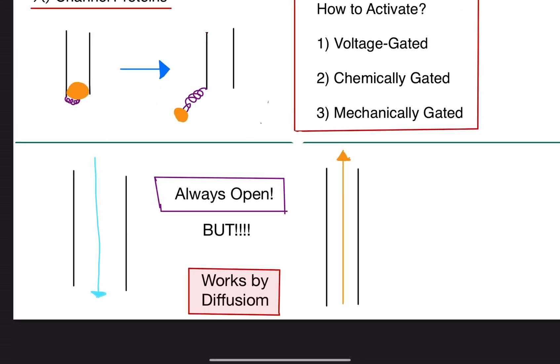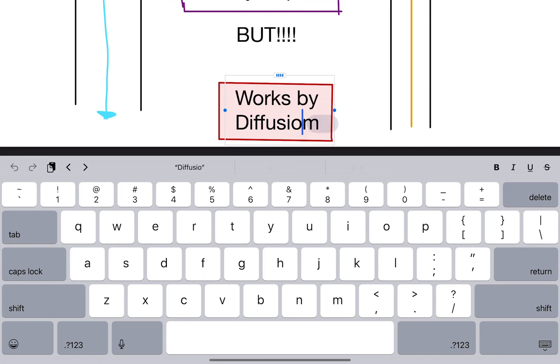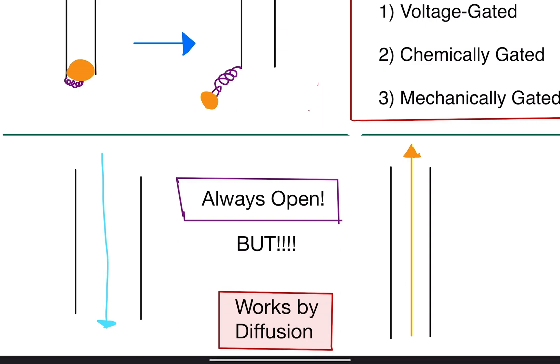Now, these are called always open channels or open channels. These are literally channels that are constantly open, so ions can go in and out. But, I spelled diffusion wrong. But, it works by diffusion. So, say if there's a lot of sodium on the outside. Remember, in diffusion, you probably learned, if we go from a high concentration to a low concentration. So, there's a lot of sodium outside the cell. It will willingly want to go inside the cell. It will willingly want to go that. So, it will use the channel and go inside the cell.